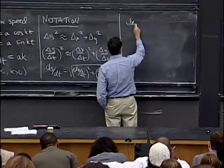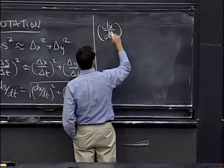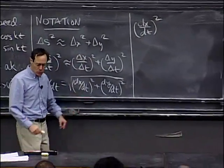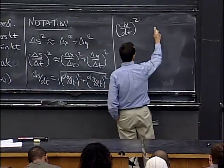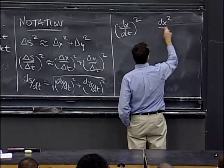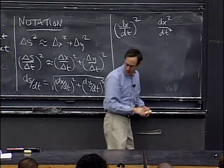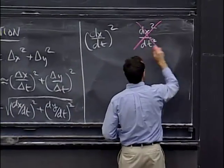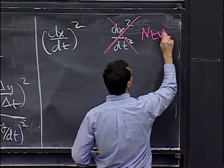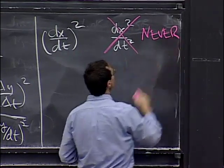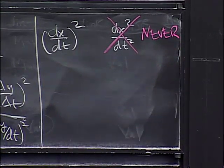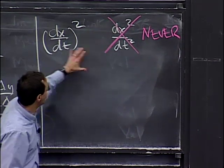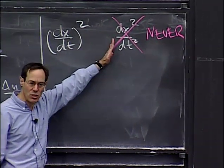Let me warn you about misuses of the notation. We use these square differentials, but we don't use them with certain ratios. You should never write ds squared over dt squared as a ratio of differentials squared. Don't do that.